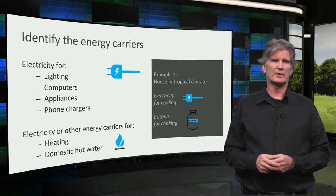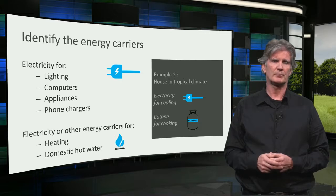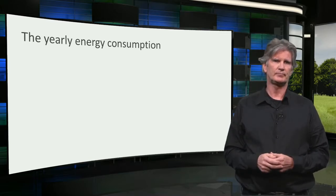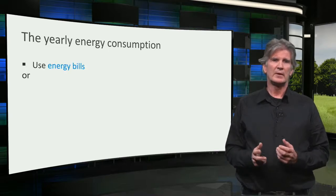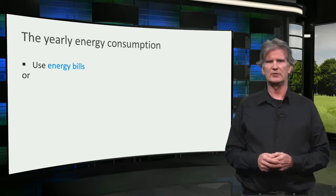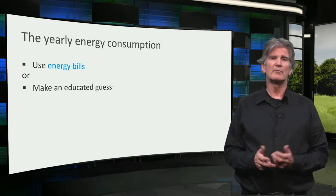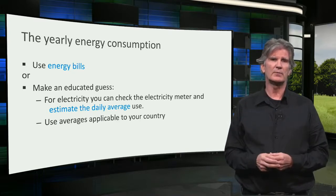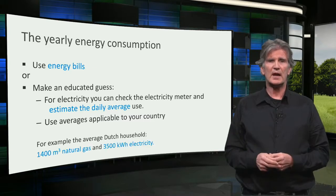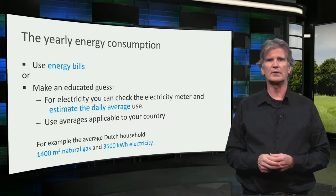For example, a house in a tropical climate might use electricity for cooling and butane gas for cooking. The next step is to figure out the yearly energy consumption. If you can get your hands on the energy bills, this is the easiest way, though most people have no idea how much energy they use in their own home. Or else you have to make an educated guess — for electricity, you can check the electricity meter for one or two days to estimate the daily average use, or you can take average values applicable in your country. For example, the average Dutch household uses 1400 cubic meters of natural gas and 3500 kWh of electricity per year.